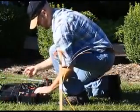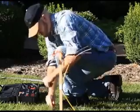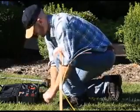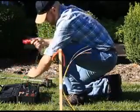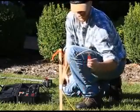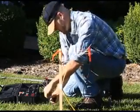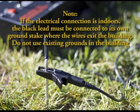At either end of the cable and with the transmitter off, connect the black lead to the ground stake and push the stake into the ground as deeply as possible. Connect the red lead to the cable that is being tested. Note that if the clock is indoors, the black lead must be connected to its own ground stake where the wires exit the building. Do not use existing grounds in the building.